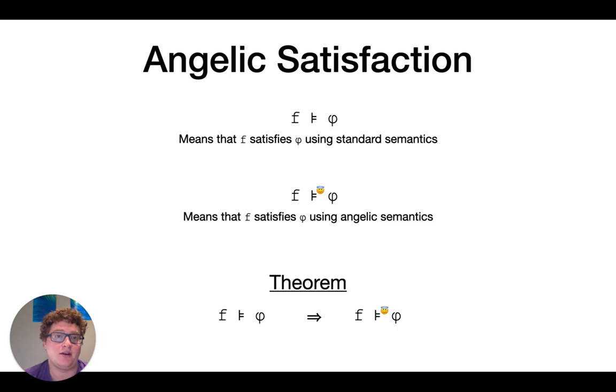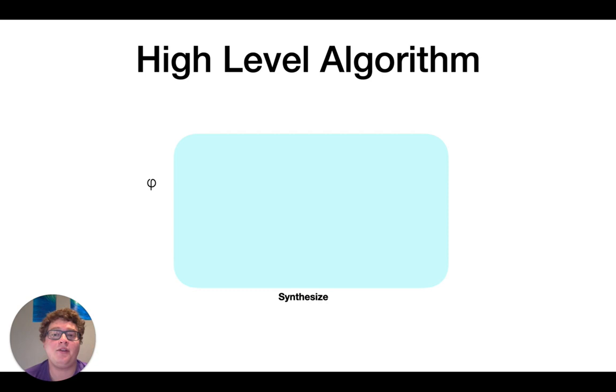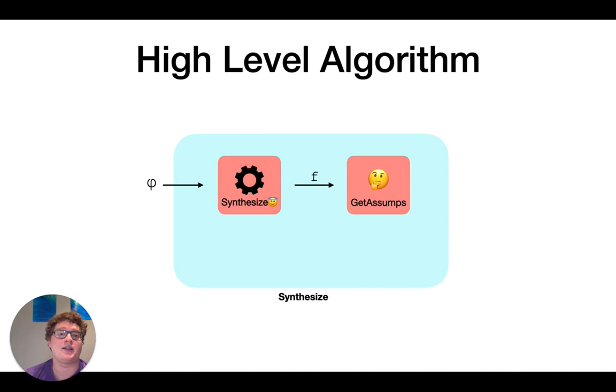So this brings us to our high level algorithm. We have this phi, and then we synthesize something that angelically satisfies phi. That's this F. Now, this angelic satisfaction is an over approximation. So we want to be able to make sure that it's correct. So we look at the assumptions that that F makes, that it doesn't necessarily hold itself. And then we look at those and we reintegrate that into the specification to make another synthesis call. And then we continue this loop for a while.